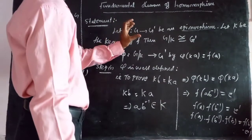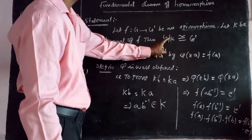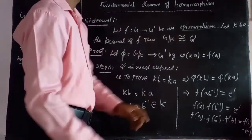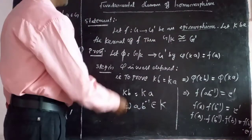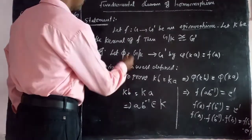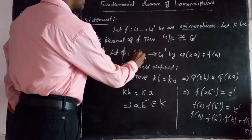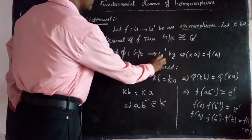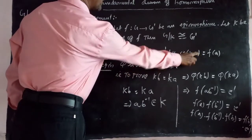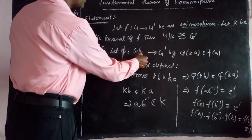First, we define a function φ: G/K → G'. Let φ be defined from G/K going to G' — π of KA equals F(a), where KA is a coset element and A is one element in G.